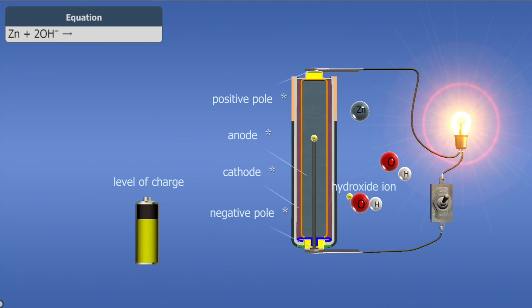Zinc atoms and hydroxide ions form zinc oxide, while water and electrons are released. These are transferred to the negative pole by an electrical conductor.